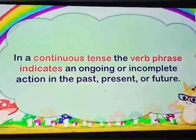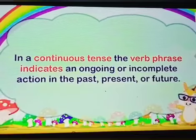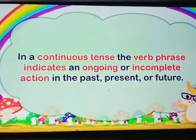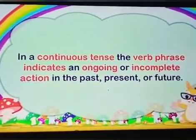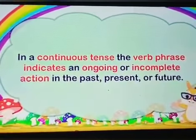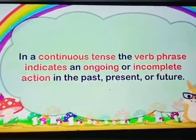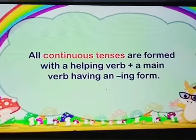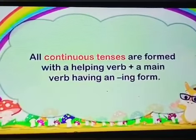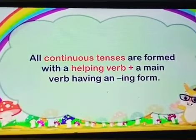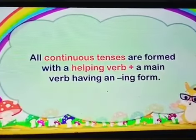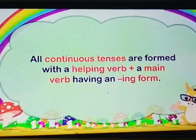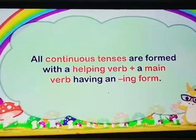In a continuous tense, the verb phrase indicates an ongoing or incomplete action in the past, present or future. All continuous tenses are formed with a helping verb plus a main verb having an ing form.